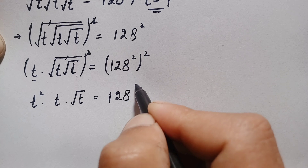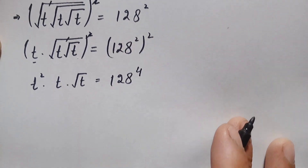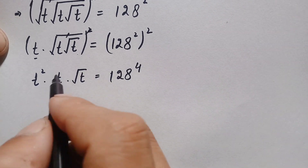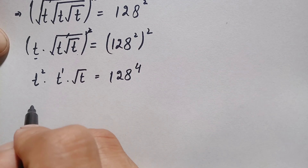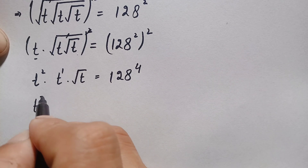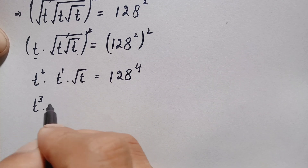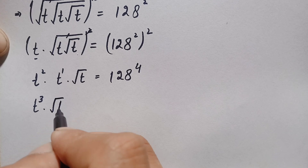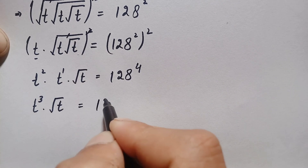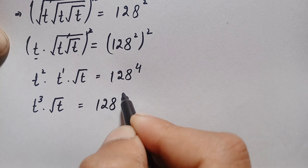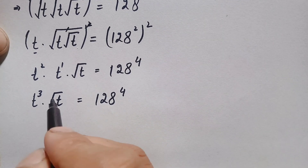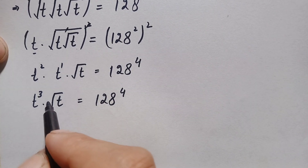Since the base of these two expressions is the same, we add their powers: 2 plus 1 is simply 3. So this becomes t raised to the power 3, times the square root of t, is equal to 128 raised to the power 4. Now we will try to eliminate this last remaining square root.